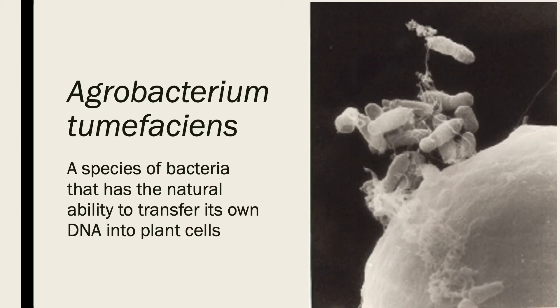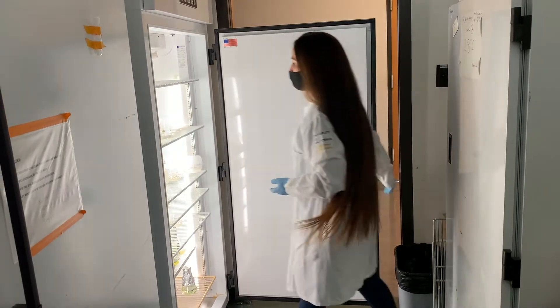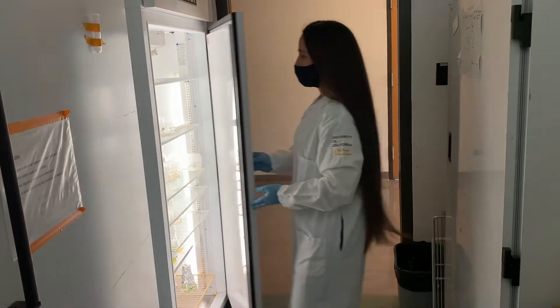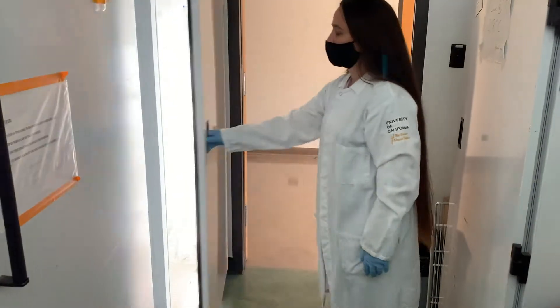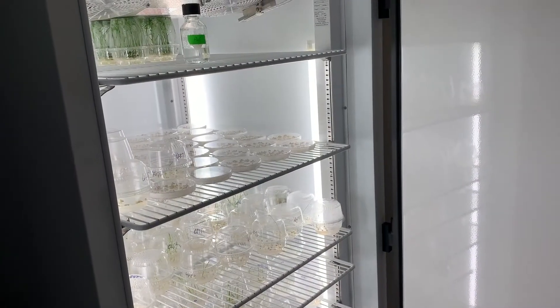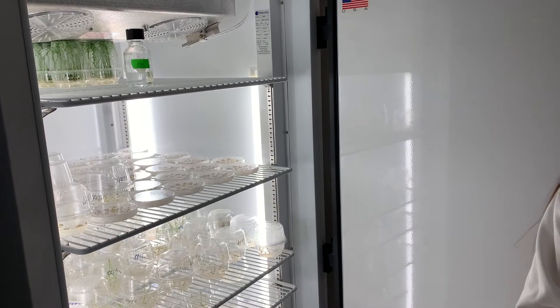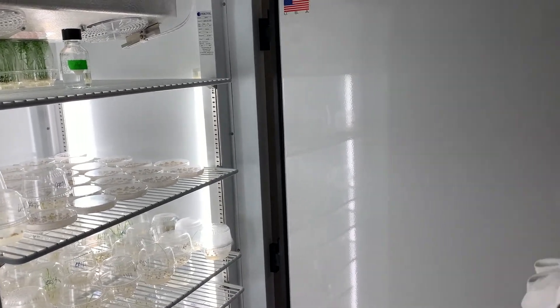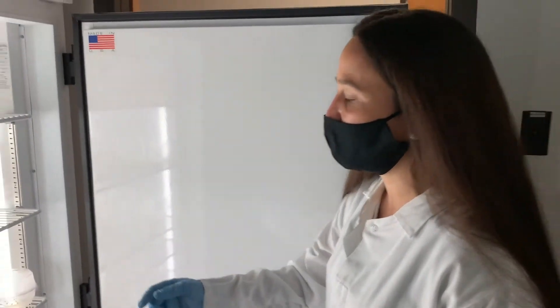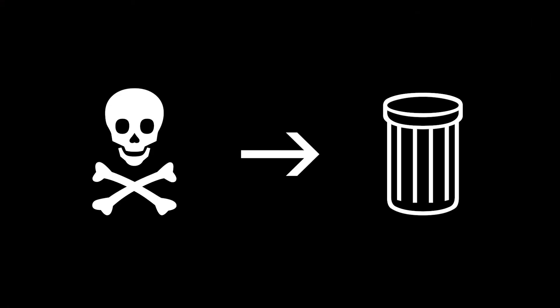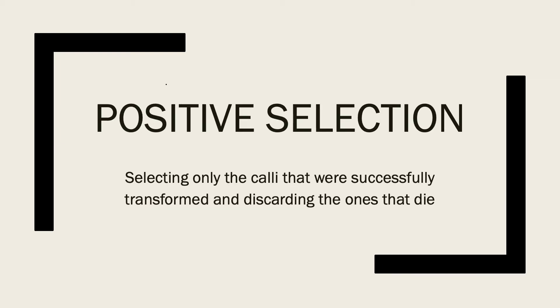We continue the transformation process, allowing the calli to grow in new medium in the incubator. While the calli are growing, we start a selection process. During the selection process, only the calli that actually received DNA from the Agrobacterium are allowed to grow. Some of the cells didn't get transformed by the Agrobacterium, so we discard those. This is called positive selection — we only keep the calli we are interested in.